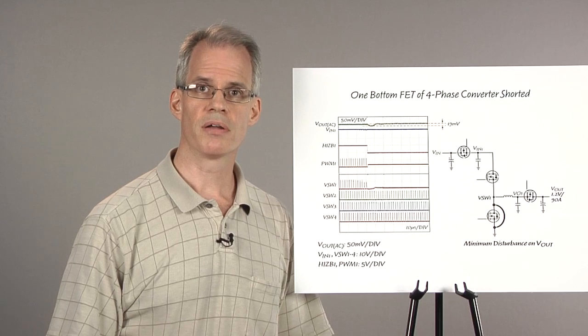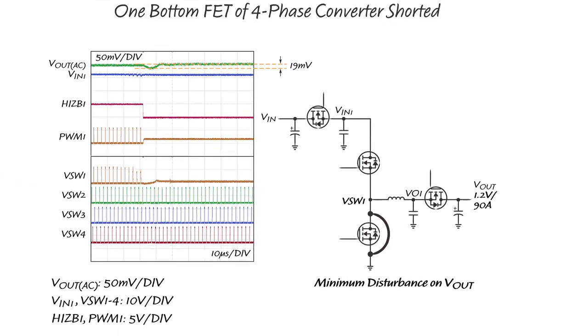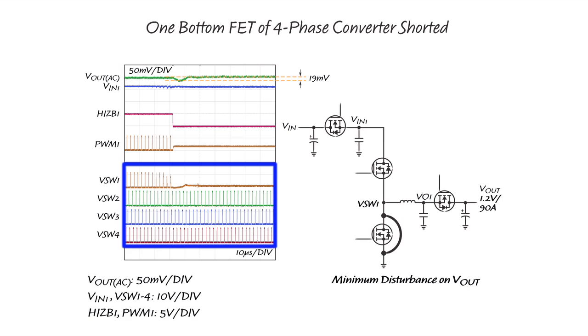Here is an example of a bottom FET failure. It was created by shorting the bottom FET of phase 1 with a resistance of 2 milliohms. The hot-swap circuit quickly isolates the main input voltage from the fault. Even though phase 1 has a fault, phases 2 through 4 continue to switch. Further protection is provided by the LTC3774 disabling the driver MOSFET. After the fault occurs, the LTC4352 ideal diode circuit blocks the current flowing from the output to the fault. The ideal diode's quick response time allows for only a 19 millivolt dip in the output voltage.